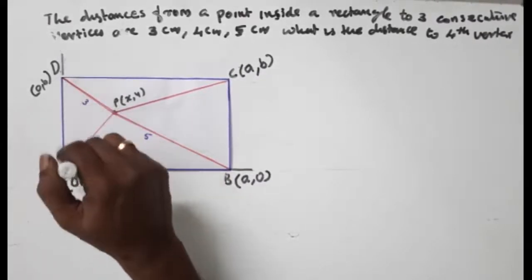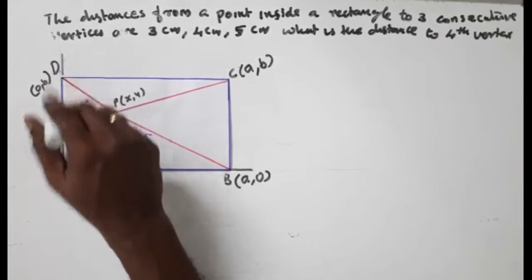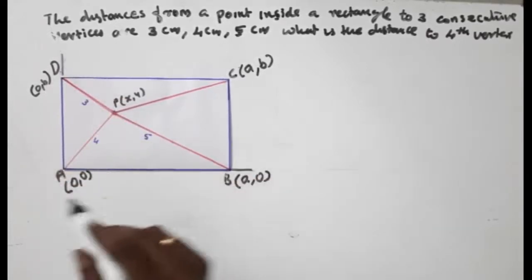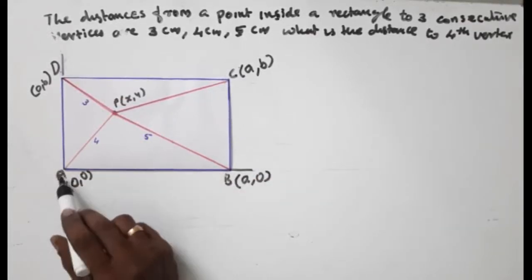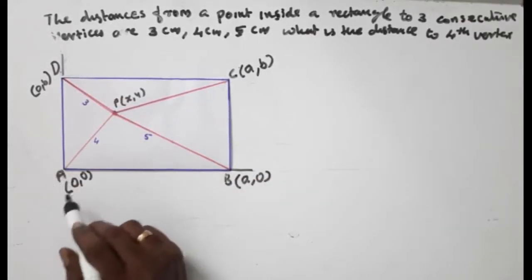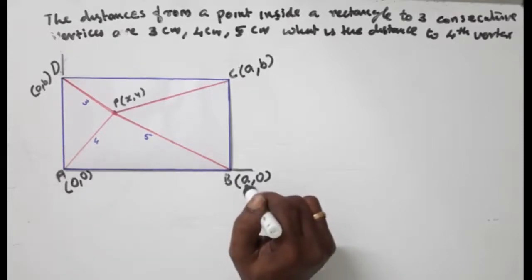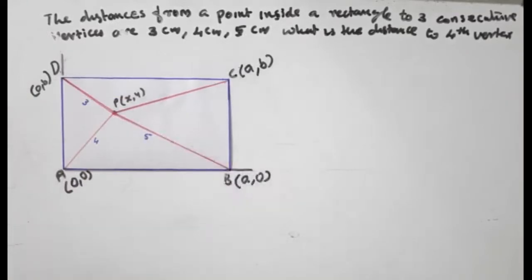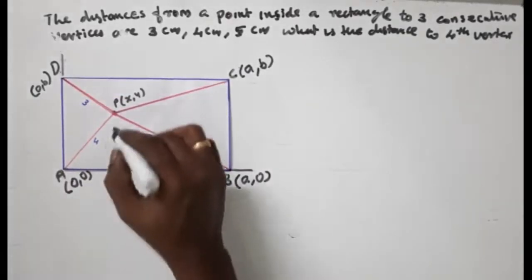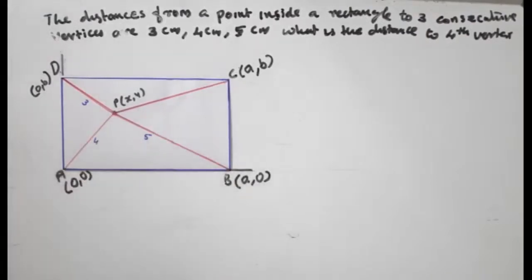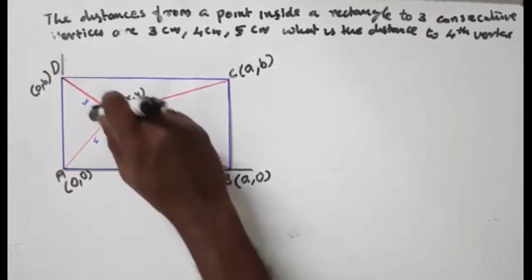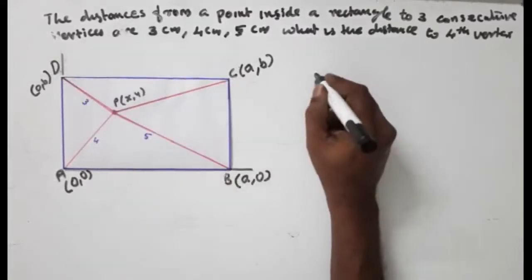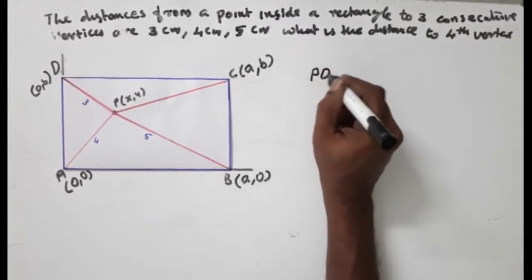Setting up the coordinate system on the y-axis. The rectangle has vertices at the point of origin (0,0), (a,0), (0,b), and (a,b). The point P has coordinates (x, y). We define the distances from P to each vertex.